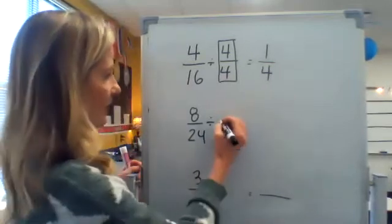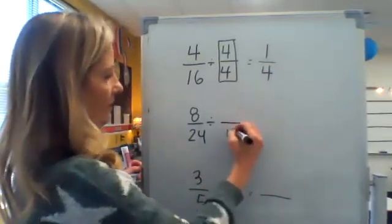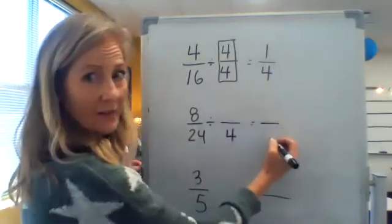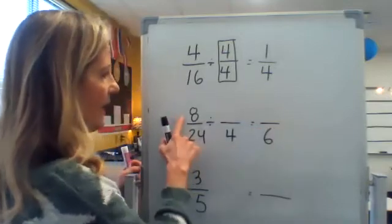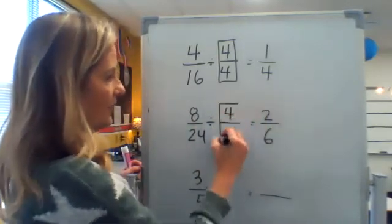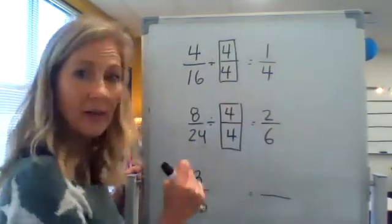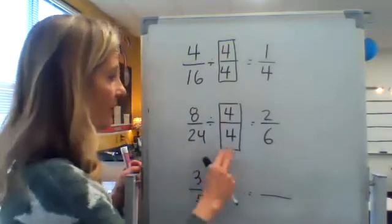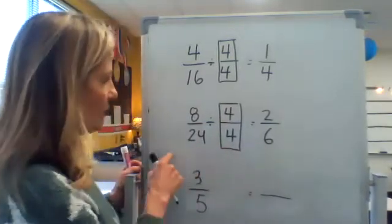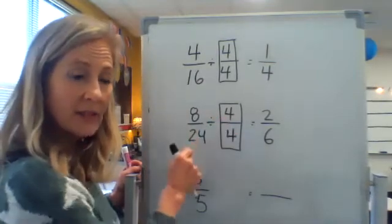Let's try that. 24 divided by four is what? Six. Eight divided by four is two. So that was a fraction that I could generate an equivalent fraction using dividing by four. So just be aware that you have to make sure that both numerator and denominator can be divided by the same number.